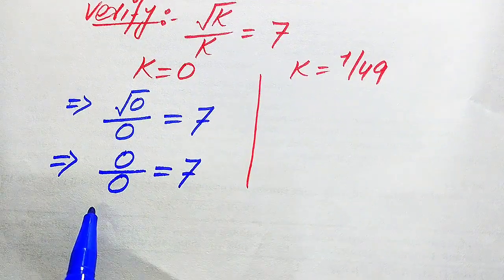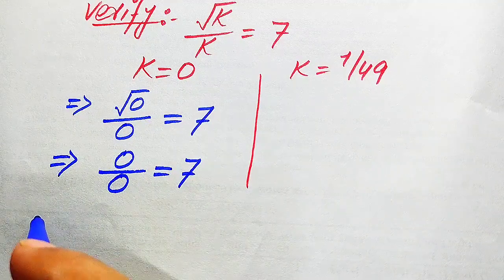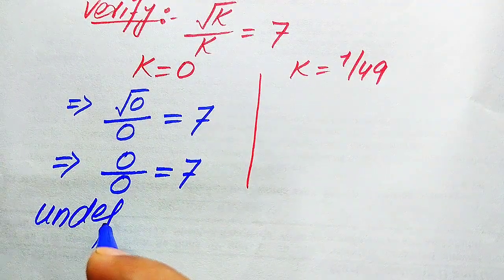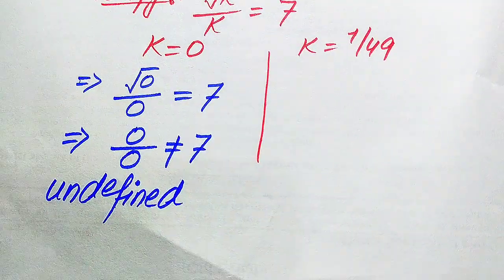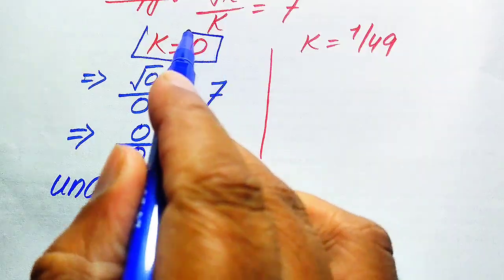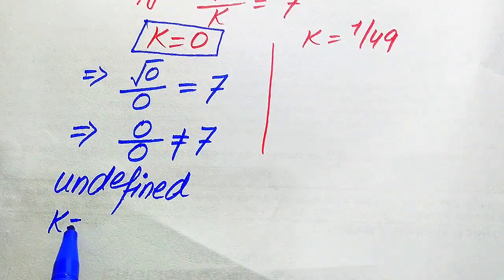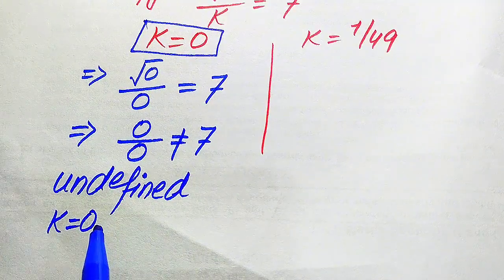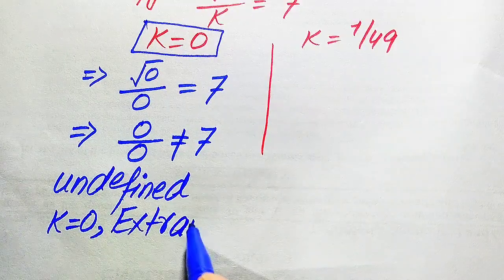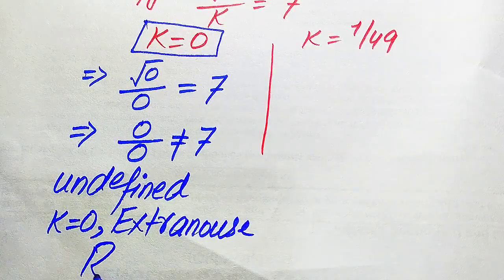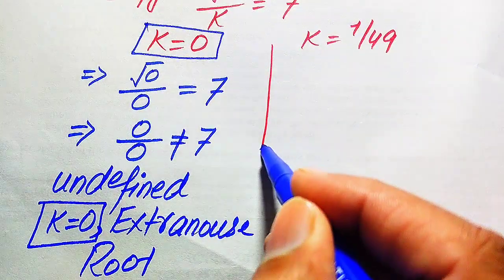We know that 0 over 0 is called the indeterminate form, or in other words it is undefined. Since the left-hand side is undefined, both sides are not equal. This means k equals 0 does not satisfy the given equation, so k equals 0 is the extraneous root.